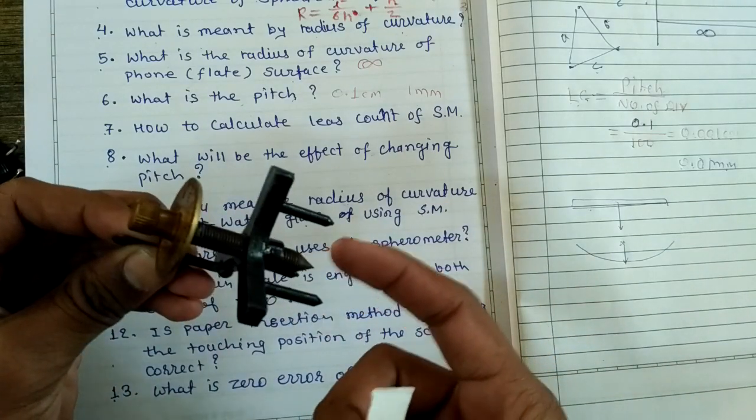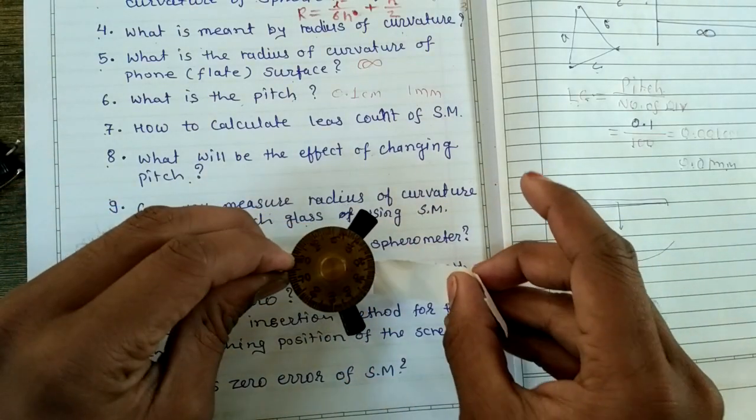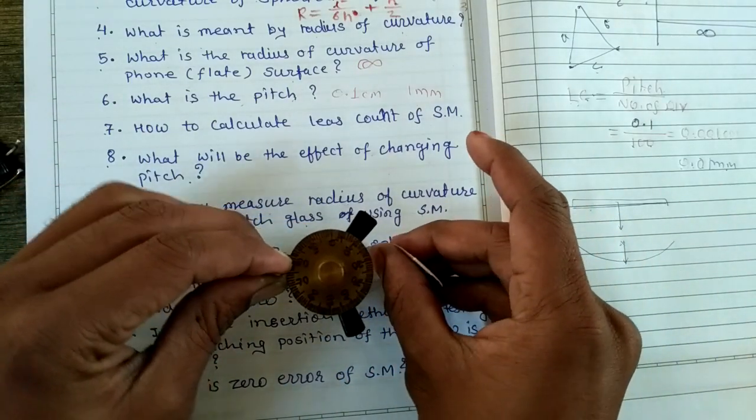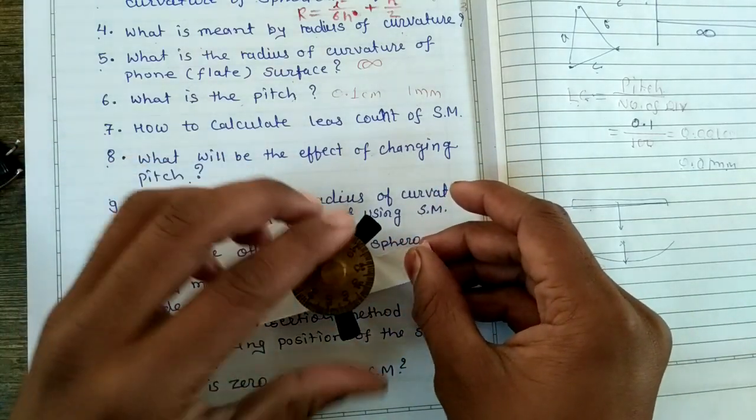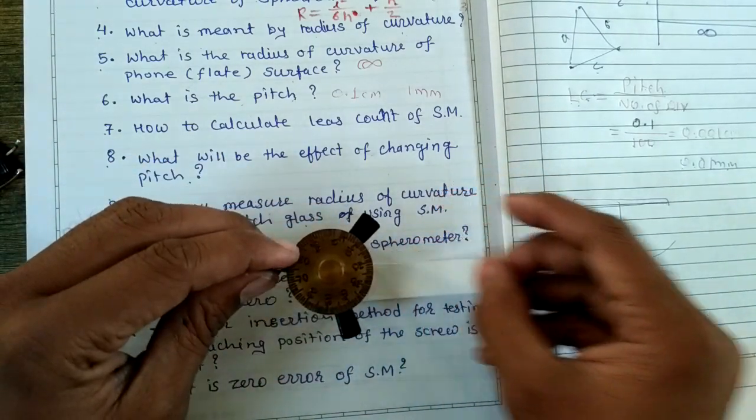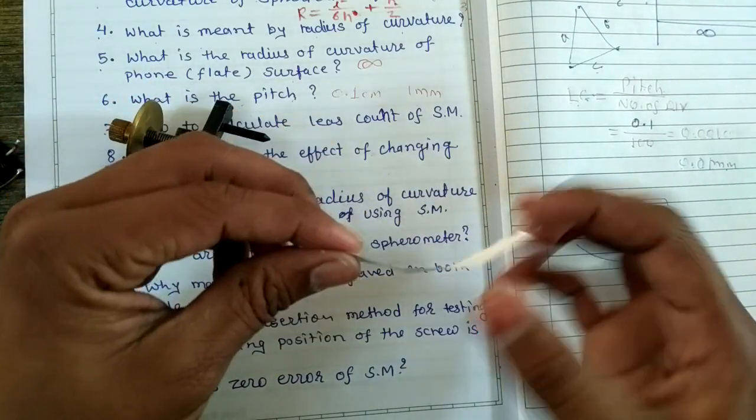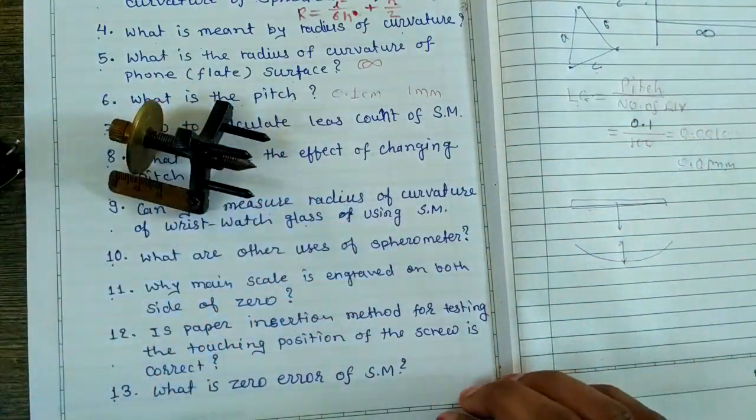Using paper - if it moves, look, this tip is not touching. This method is not good because the thickness of paper is much more.